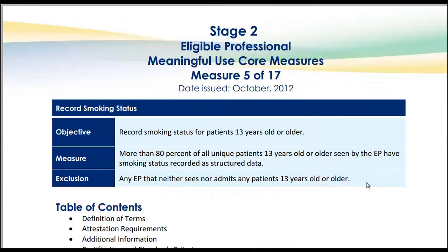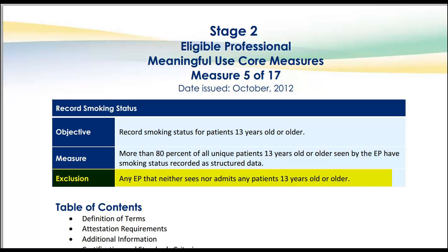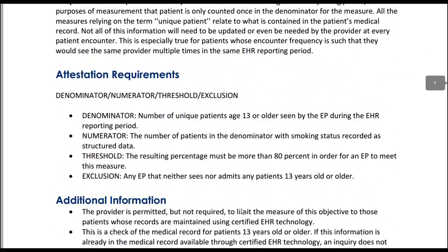Let's open the PDF from the CMS website. The objective of this measure is to record smoking status for patients 13 years old or older. The measure requires more than 80% of all unique patients 13 years old or older seen by the eligible professional to have smoking status recorded as structured data. The exclusion applies to any eligible professional that neither sees nor admits any patients 13 years old or older.